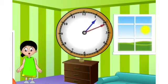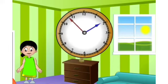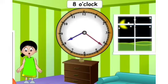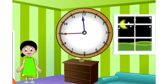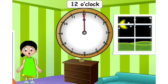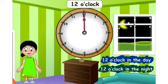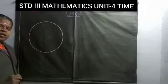Similarly, every time the minute hand completes one round, the hour hand moves to the next number. So the time shown will be 2 o'clock, 3 o'clock, 4 o'clock, and so on. As the minute hand completes its 12th round, the hour hand will also be on 12 and the time will be 12 o'clock again. However, the difference between the first 12 o'clock and the second 12 o'clock will be day and night.